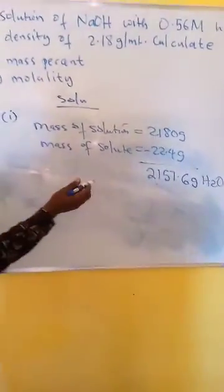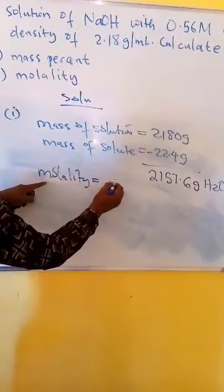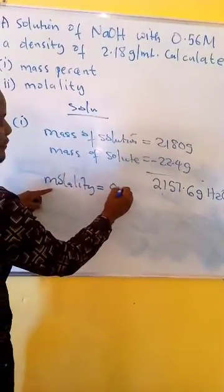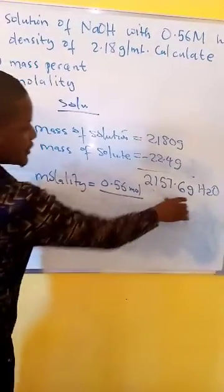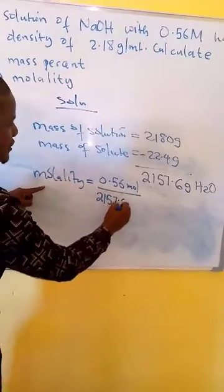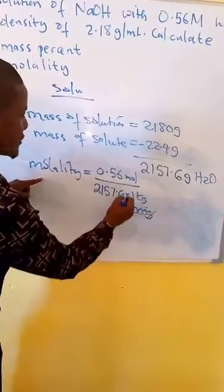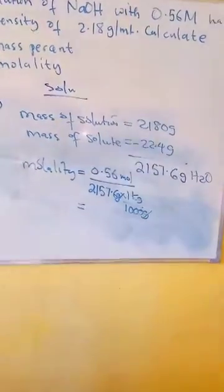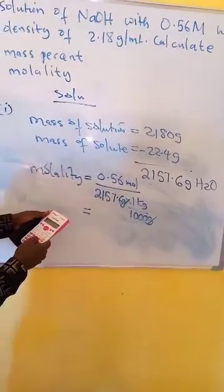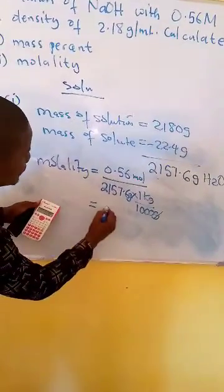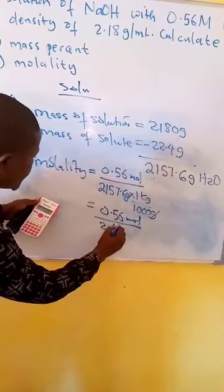Molality is equal to moles of solute divided by kilograms of solvent. We have 0.56 moles of sodium hydroxide. We convert the mass of water to kilograms: 2157.6 grams times 1 kg over 1000 grams gives 2.1576 kg. So molality equals 0.56 divided by 2.1576.